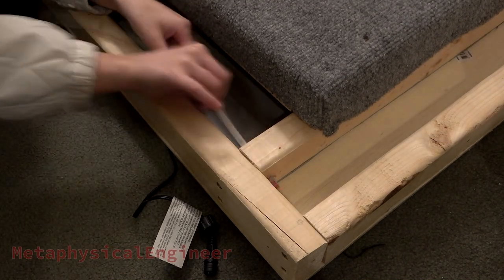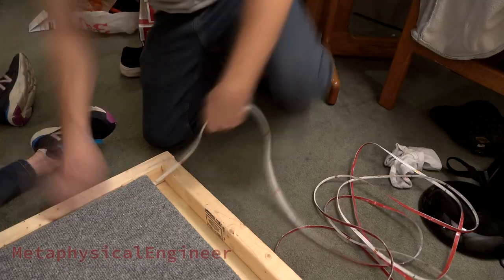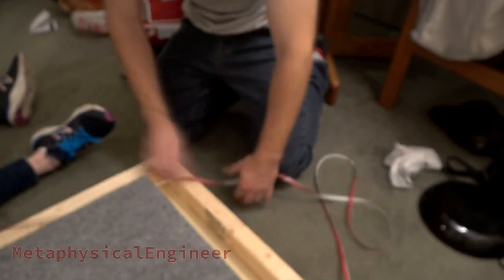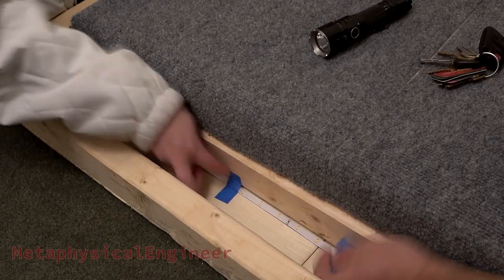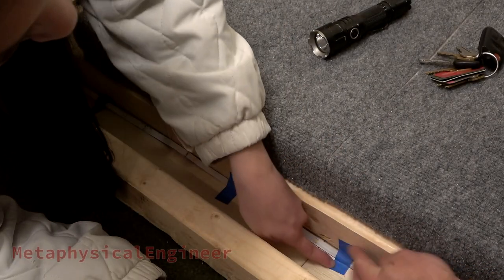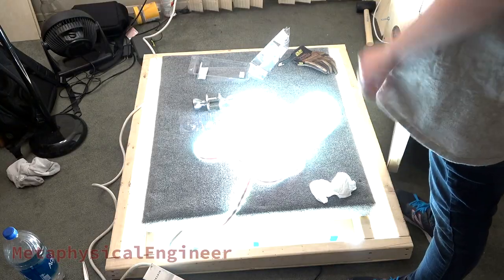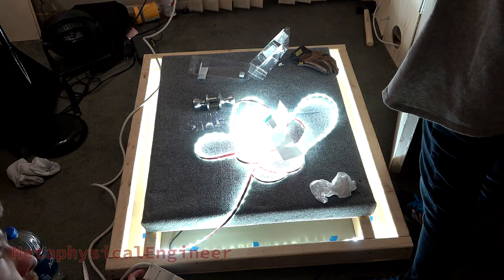We started with one wrap, using painter's tape to keep it there for testing. When one proved too dim, we drilled a second set of holes and fed another round through. Much better.